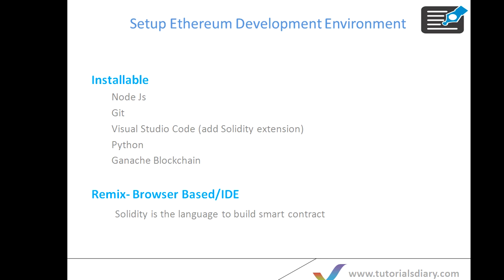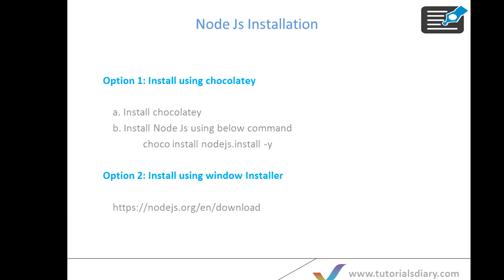Let's start with the Node.js installation. Node.js can be installed by two ways. The first option is through Chocolatey and the second is the Windows installer. The second option is very straightforward — you can go to the Node.js link, download the installer and install it. The first option, Chocolatey, is what we always recommend because going forward we will use this tool to install all the other tools like Python, Git, and Visual Studio.